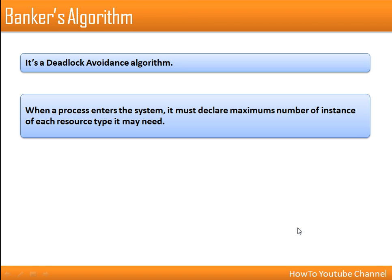In this video we will see how Banker's Algorithm works. This algorithm is used for avoiding deadlock. It will check whether the system is in a deadlock state or not. Whenever a process requests resources, in order to allocate the required number of resources to a particular process, this algorithm first checks whether after allocation any deadlock state is possible or not.